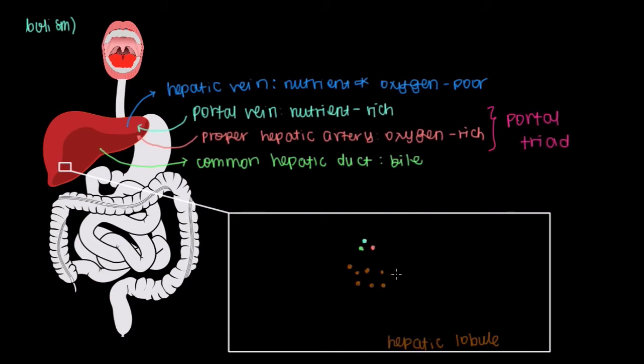Now this portal triad isn't found in just one part of the hepatic lobule. In fact, there's a bunch of them that surround the hepatocytes and make this very familiar shape you might recall from chemistry. It's this six-sided ring that makes up the hepatic lobule that has six units of the portal triad surrounding the hepatocytes. And this is how we get nutrient-rich blood to enter into the hepatic lobule.